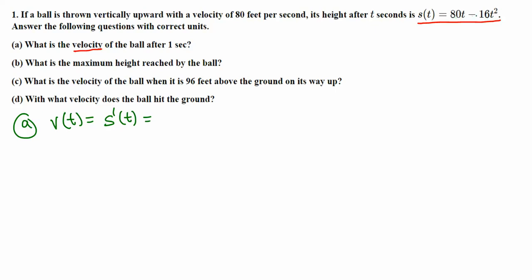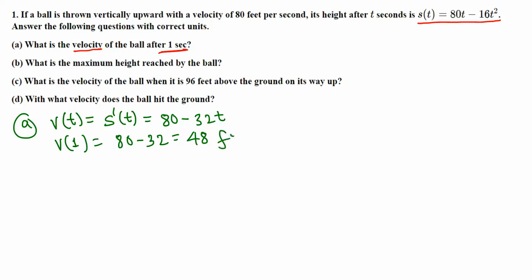The derivative of 80t minus 16t squared is 80 minus 32t. That's the velocity at any time t. But we want the velocity after one second, so we replace t by 1. So v(1) is 80 minus 32 times 1, which is 80 minus 32, giving us 48 feet per second.